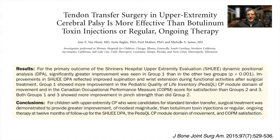Here is one study where tendon transfer surgery in upper extremity cerebral palsy is more effective than botulinum toxin injections or ongoing therapy. You would think that this landmark study in the Journal of Bone and Joint Surgery would convince people that surgery can be at least considered as an option. However, physiatrists and neurologists typically don't read this journal.